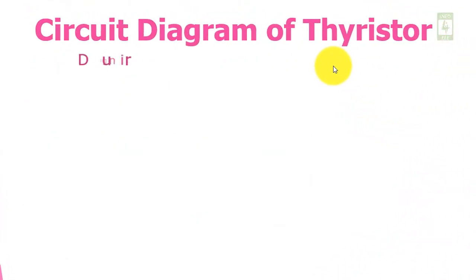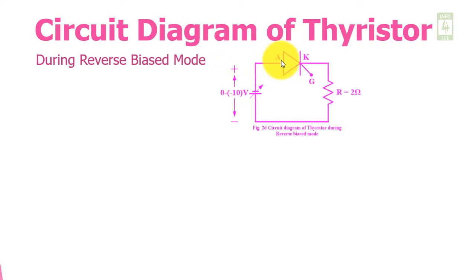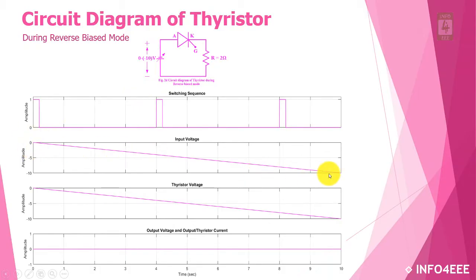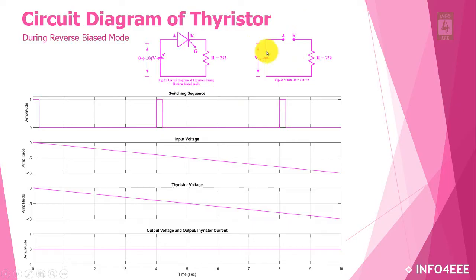Now we will discuss the circuit diagram of thyristor during reverse bias mode. In this mode the anode of the thyristor is connected to the negative terminal of the battery, while the cathode is connected to the resistance with the positive terminal. We are varying the input voltage from 0 to −10V. In this mode the input voltage is less than the threshold voltage throughout the duration, so the thyristor remains off and acts as an open circuit — no current and no voltage drop across the resistance. All the input voltage will be seen across the thyristor, and there is no effect of the gate signal on the output.